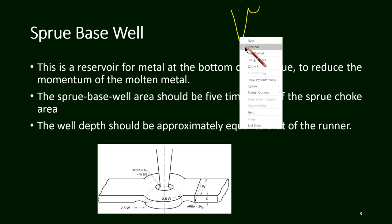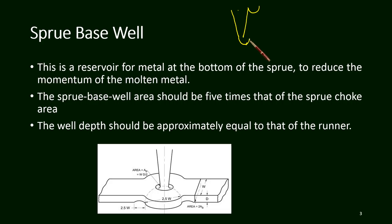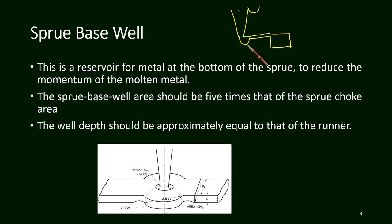Looking at the diagram: this is the pouring basin, here is the sprue, from the sprue there is a sprue bell, and then this is the runner, and here we have the cavity, and this is the gate.